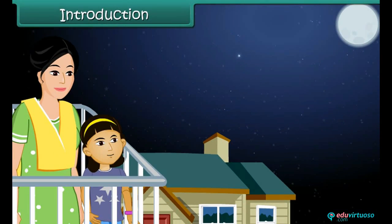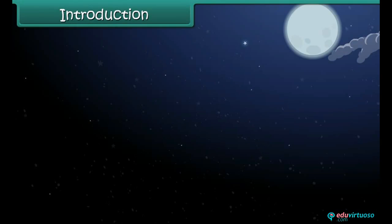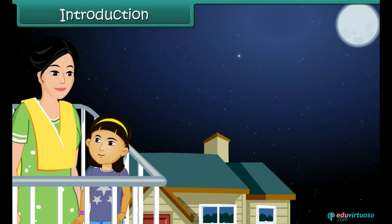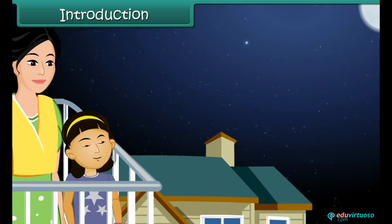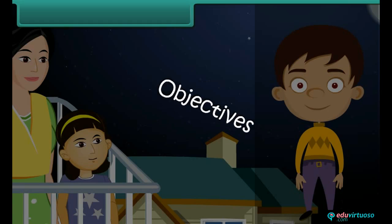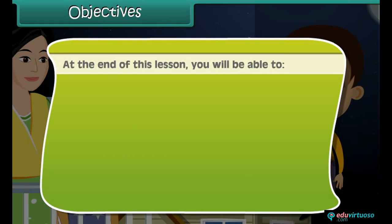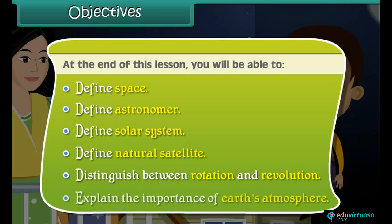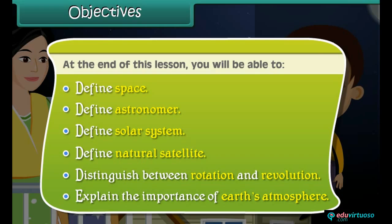Introduction: Ravina likes watching the twinkling stars in the night sky. Today she notices a star that doesn't twinkle. She wonders if it is a special star and asks her mother. Her mother tells her it is not a star but a planet. In this lesson, you'll learn about the objects in space. Objectives: define space, define astronomer, define solar system, define natural satellite, distinguish between rotation and revolution, and explain the importance of Earth's atmosphere.